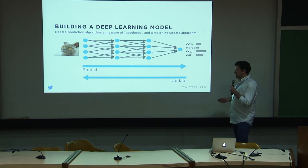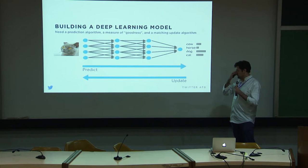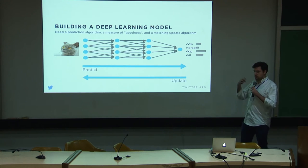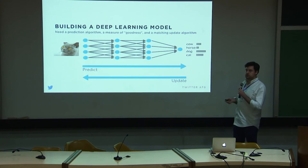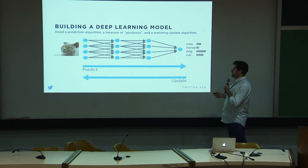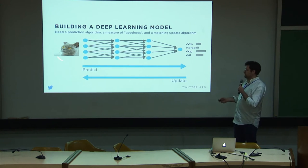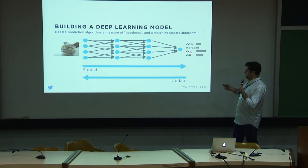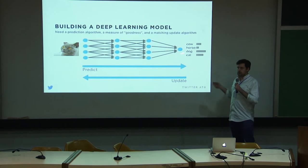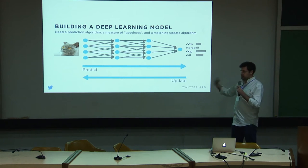If we take away this DSL and actually want to understand what's going on inside, there are really three main parts to constructing one of these models. First, you need to be able to make a prediction: given an image, I want to produce four numbers — the probability that it's a cow, a horse, a dog, or a cat. There's some linear algebra that occurs there. Second, you need a measure of goodness — a single number that tells you how far your prediction is from the truth.